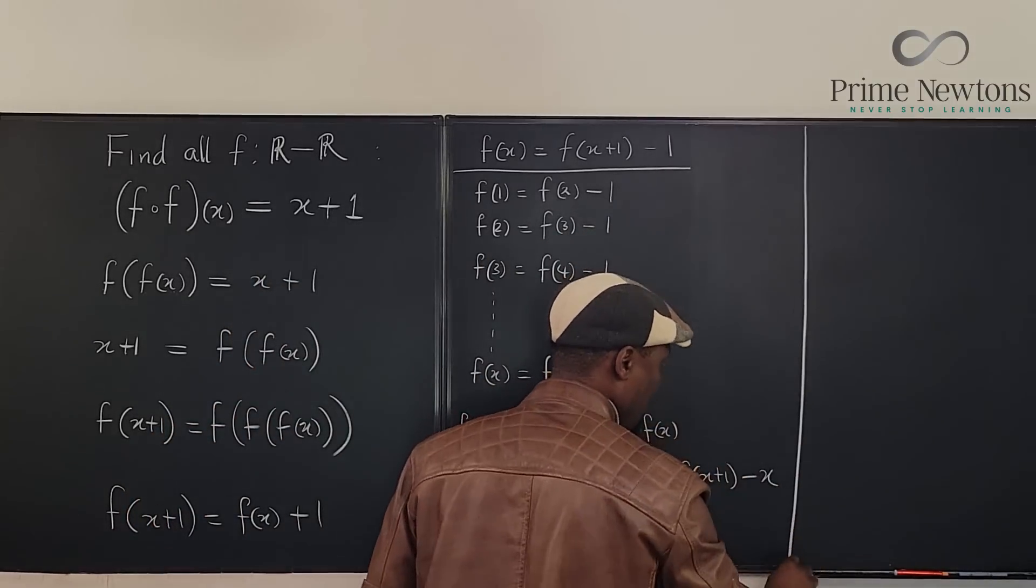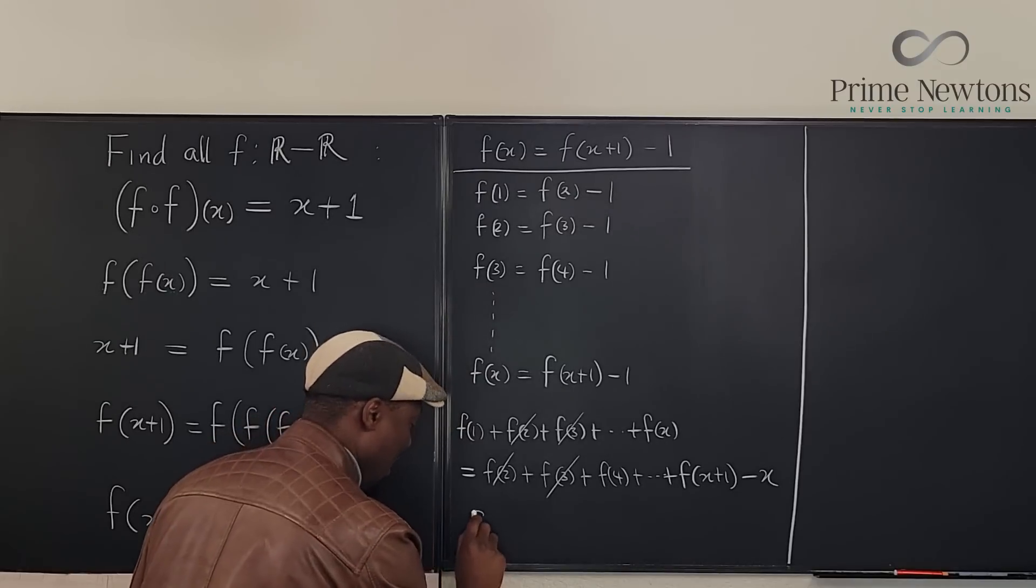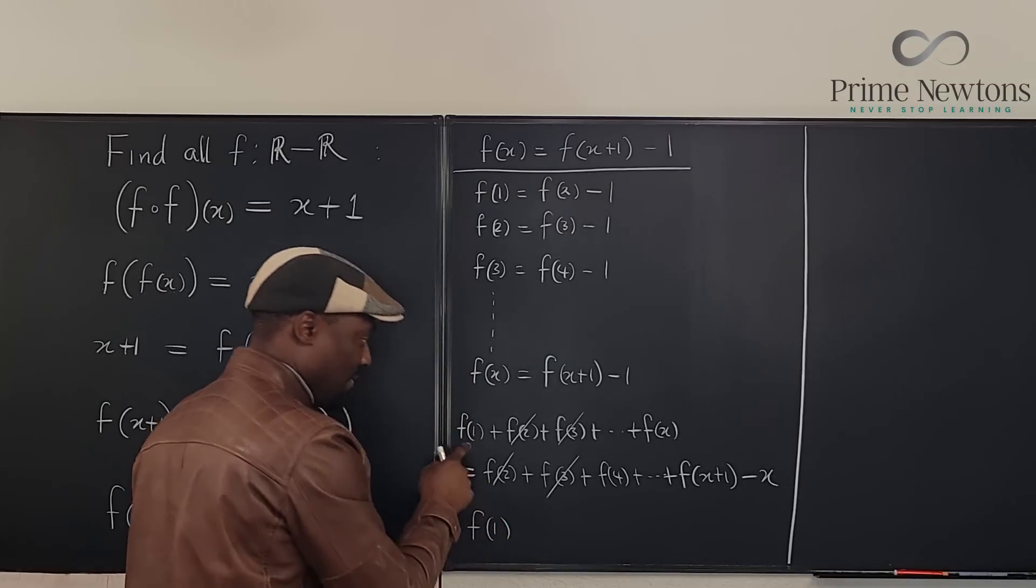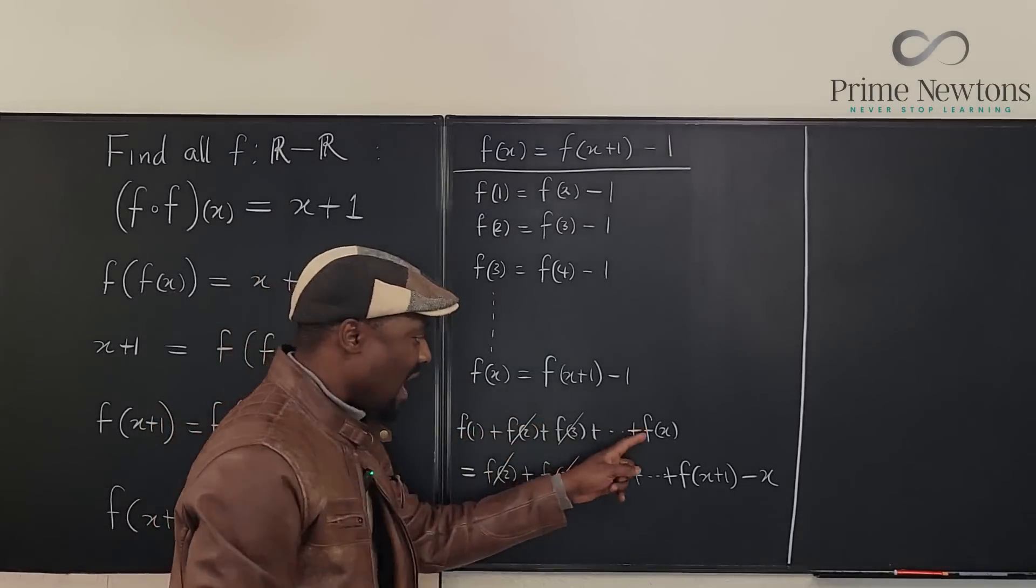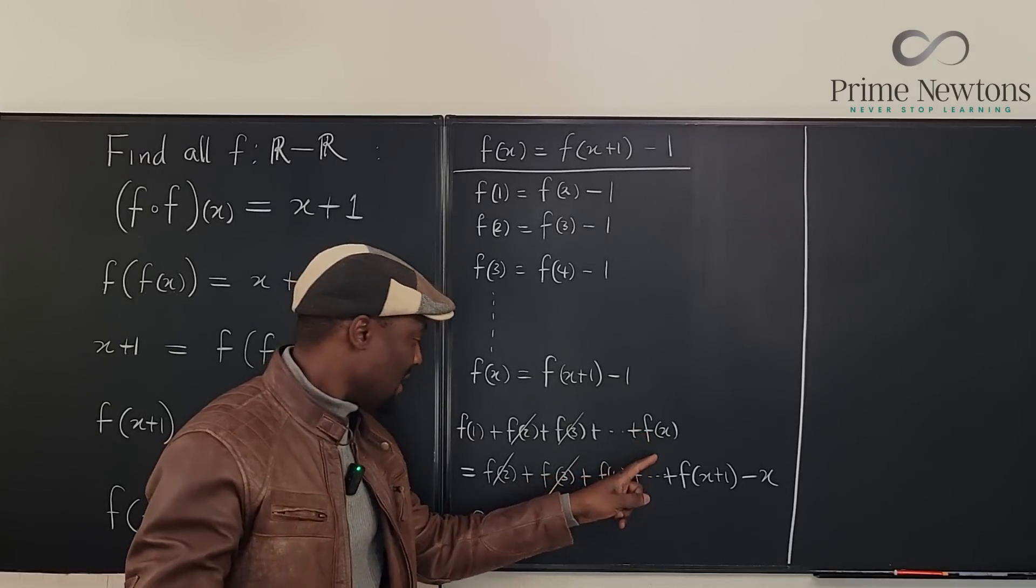So clearly we know that f of one will survive if we move everything to this side. Will f of x survive? f of x will not survive sadly.